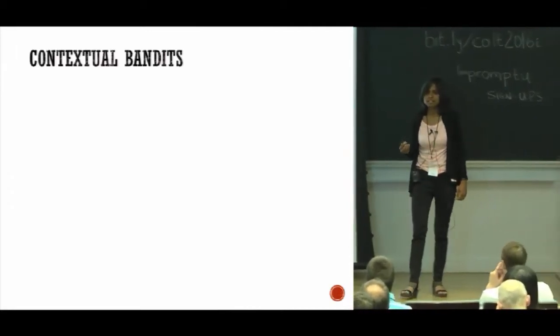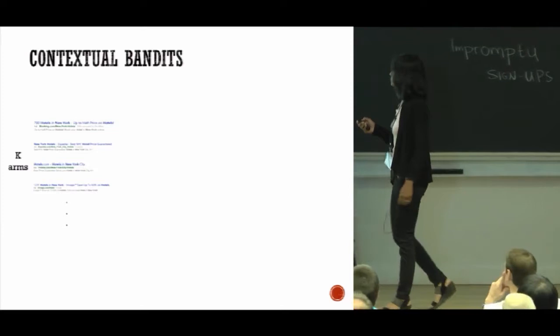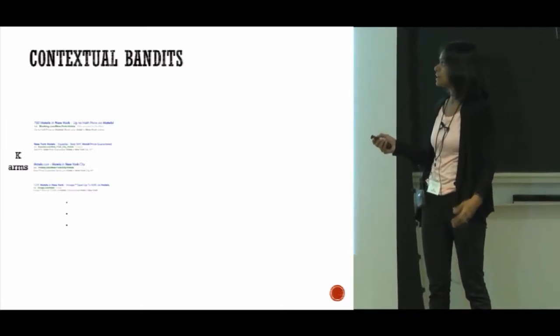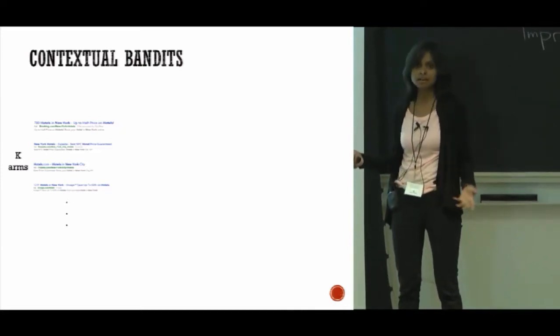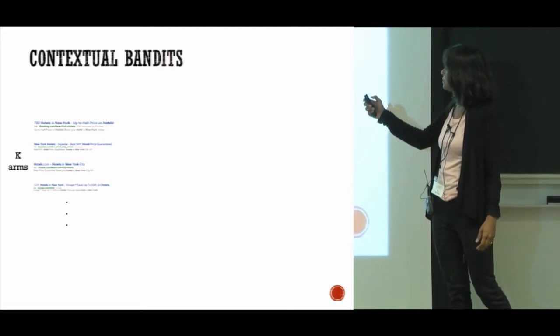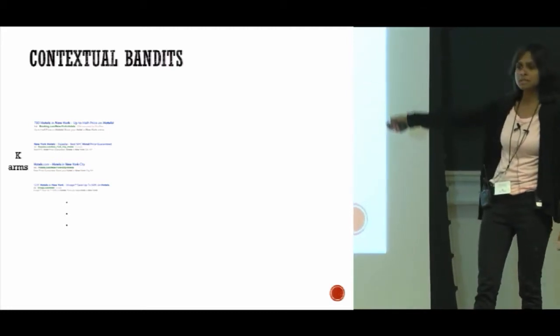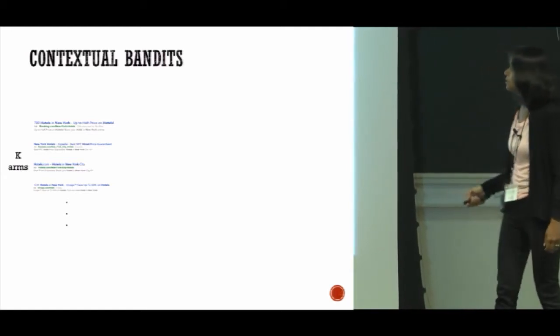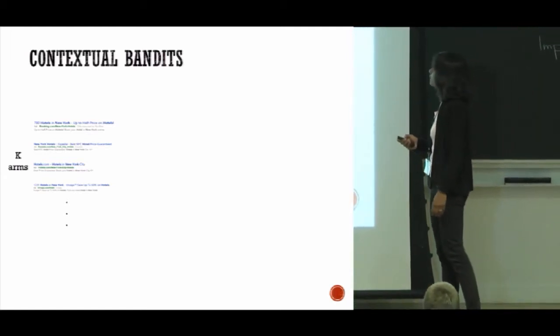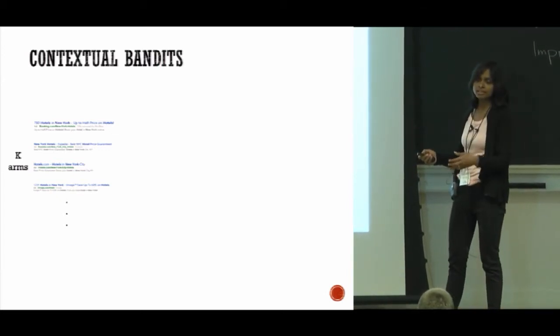Let me first define the contextual bandits problem as we consider it. In this problem, as in the usual bandits problem, every time an algorithm has to pick between k arms. In the example I'll be considering, these are hotel advertisements in New York City, and you have to pick one of the ads to show to the user. If you show the ad, the user may or may not click on it, and that's your reward.